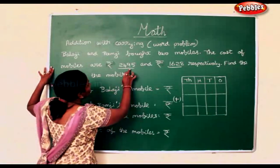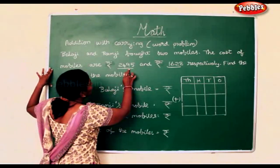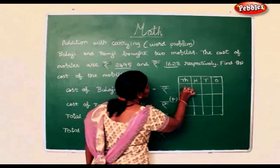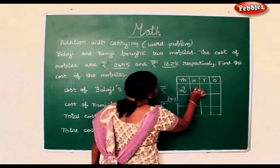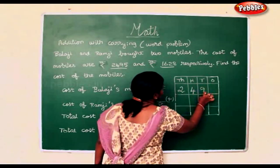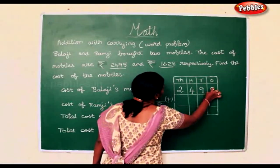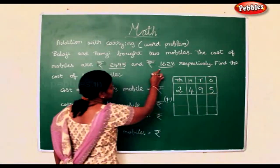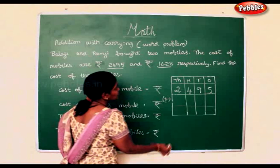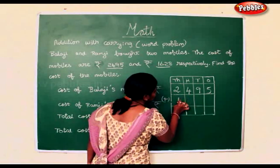Now the first mobile was bought for 2495. The other mobile's price is 1628.